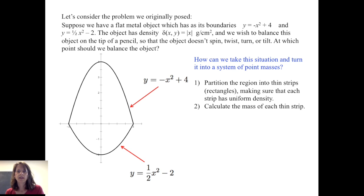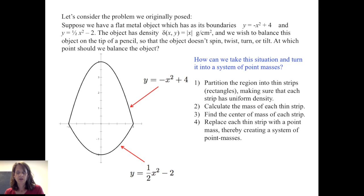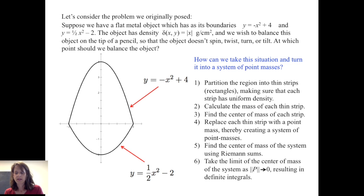We calculate the mass of each thin strip, then find the center of mass of each strip. We replace each thin strip with a point mass, thereby creating a system of point masses. We use our formulas to find the center of mass of the system of point masses using Riemann sums, then take the limit as the norm of the partition goes to zero, resulting in definite integrals giving us our center of mass.